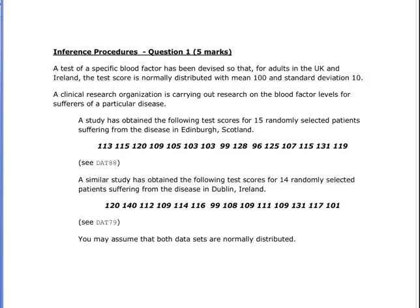Alright, this is the next in our Statistics with R. What we're going to do is look at this. A test for a specific blood factor level has been devised such that for adults in the UK and Ireland, the test score has a mean of 100 and a standard deviation of 10. A clinical research organization is carrying out research—for that mean of 100, that's the entire population.